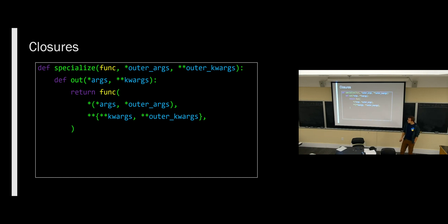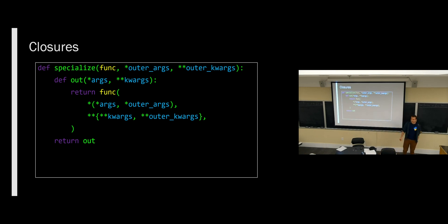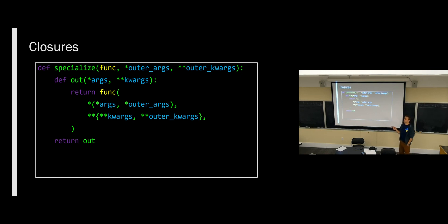Can you talk about what star and star star do if you use them outside of a function call or function definition? I said last lecture that it wasn't possible, but apparently it is — I just didn't know about it. In this context, what this means is: create a tuple where we unpack that thing and that thing into the tuple, and then that tuple immediately gets re-unpacked. So we're unpacking two tuples into a single tuple and then unpacking that into a function call — all of these stars refer to unpacking.